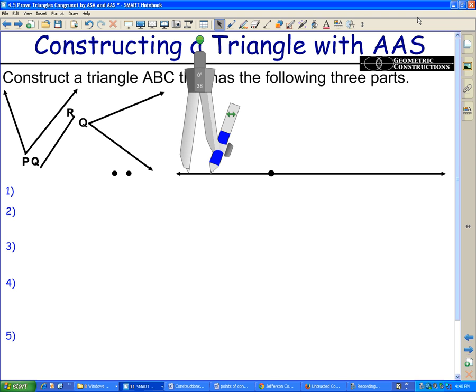This is the fourth construction, angle side, also known as side angle angle. Basically we're given two angles and a side, but the side is not between or included between the two angles.